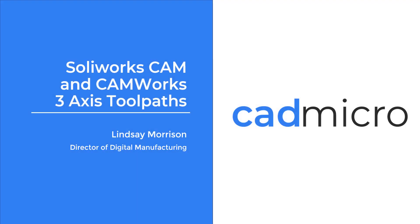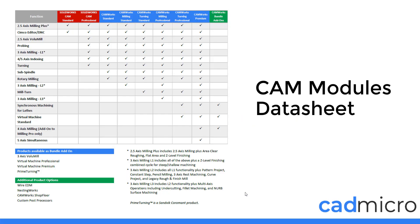In today's video we will cover SOLIDWORKS CAM and CAMWorks 3-axis toolpaths. The first thing I'm going to open is the CAM modules data sheet. You may have been sent this or found it on the internet. It's readily available and it basically goes through all of the different modules that are available within SOLIDWORKS CAM and CAMWorks.